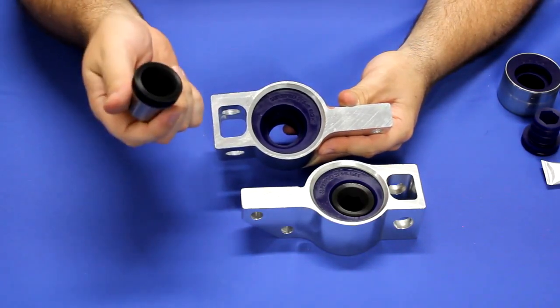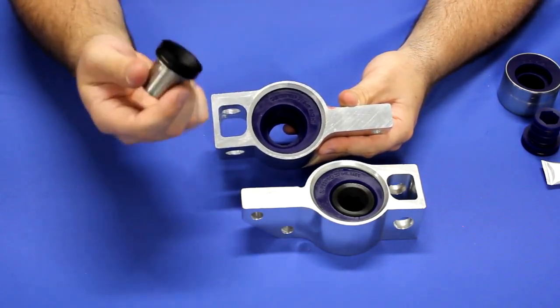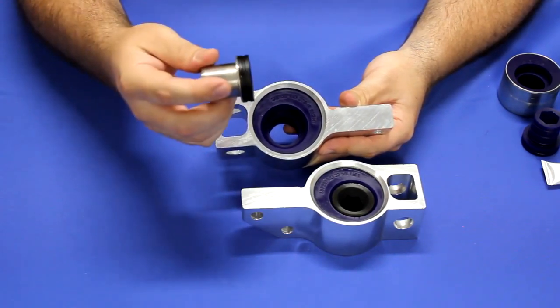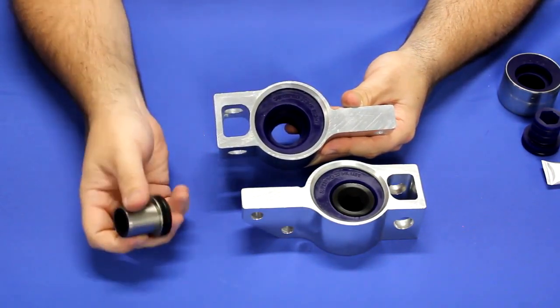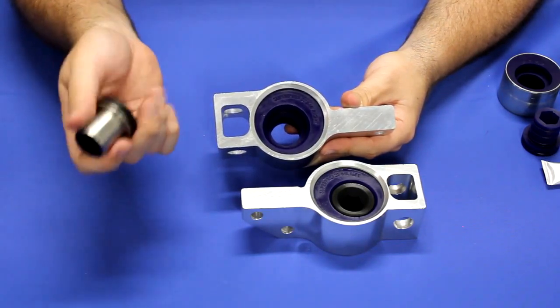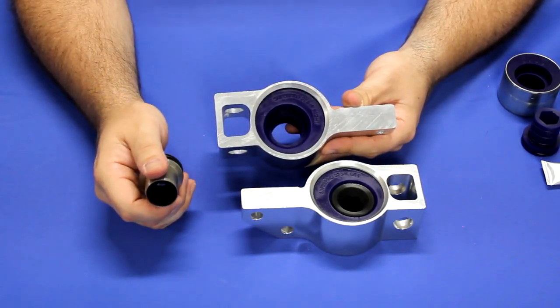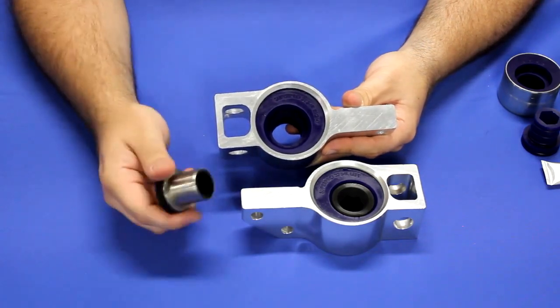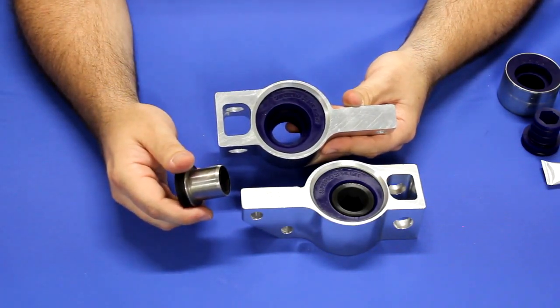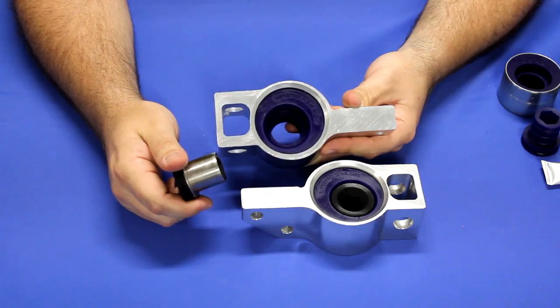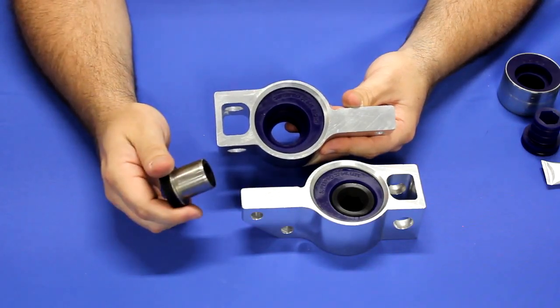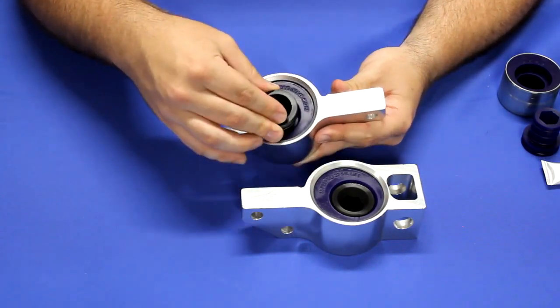If you're more into performance driving, you're getting to the track, you're autocrossing frequently, this is going to be a more durable kit than the one we showed you earlier. It's also going to save you some installation cost money. You don't have to press the bushing in or out. It already comes assembled. All of our kits have a lifetime warranty on the polyurethane with the intention that you'll probably never have to use it. But in the event you find a way to damage them, we'll take care of it.